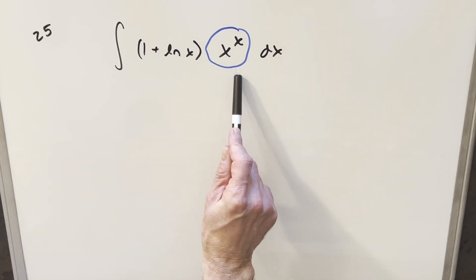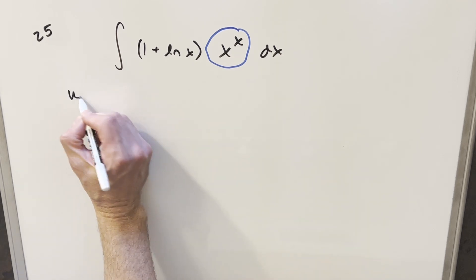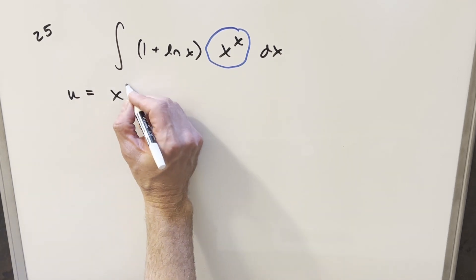So what I was thinking is, I'm not sure exactly what the derivative of this is, but we might be able to do a u substitution. So let's just try a u substitution for this x to the x.